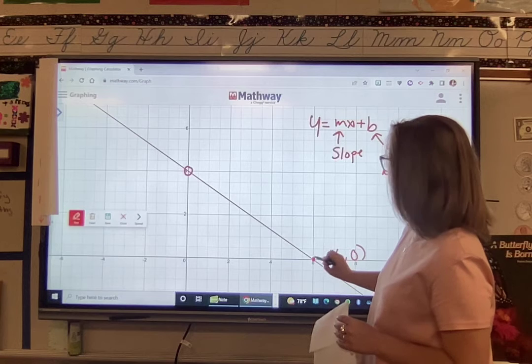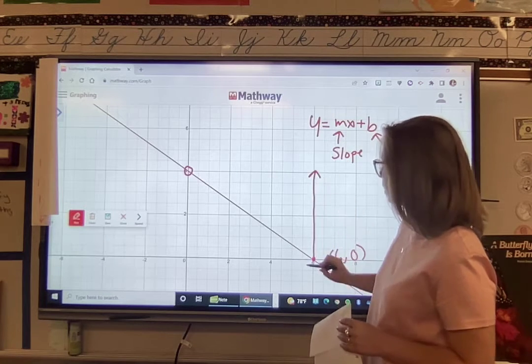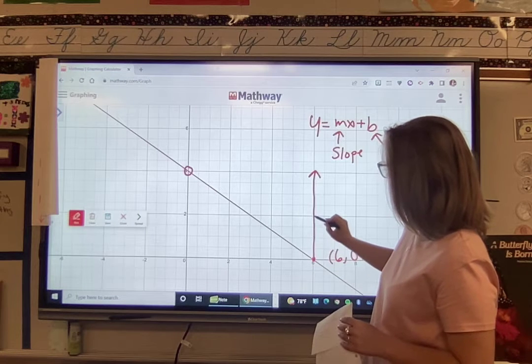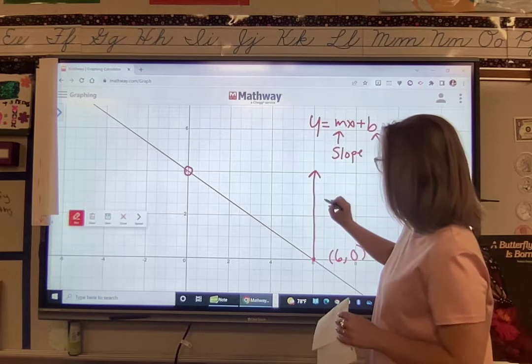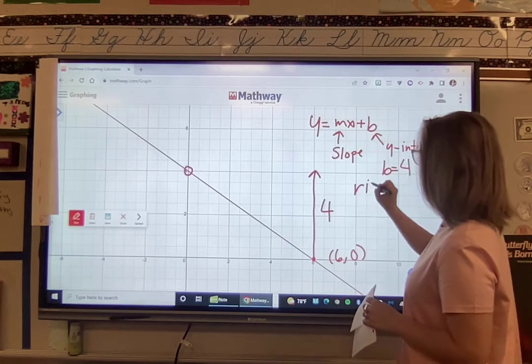So I'm just going to go all the way up. Here this is my rise, and my rise is 1, 2, 3, 4. And we're finding rise over run for the slope.